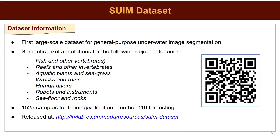In summary, the SWIM dataset facilitates large-scale supervised training of underwater image segmentation models for general-purpose use. It contains semantic pixel annotations of important object categories such as fish, reefs, aquatic plants, wrecks or ruins, human divers, robots, and seafloor, over a variety of backgrounds and water body types. The dataset and relevant information can be found by following the provided link.